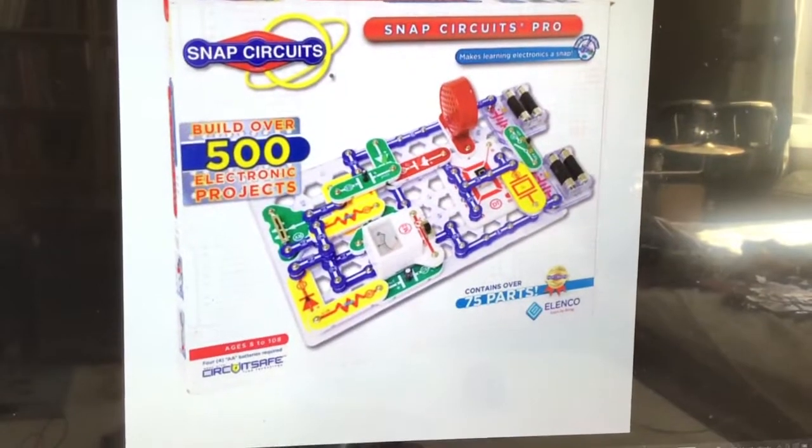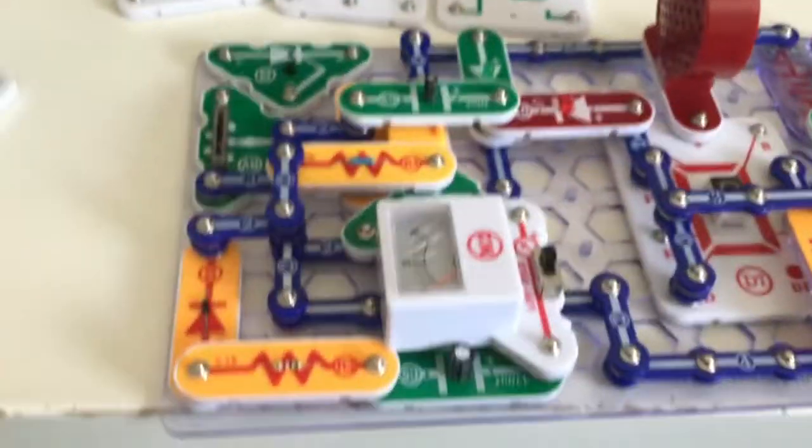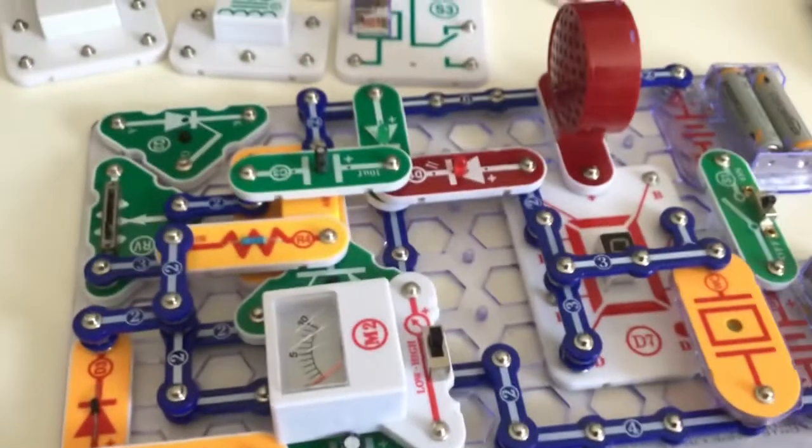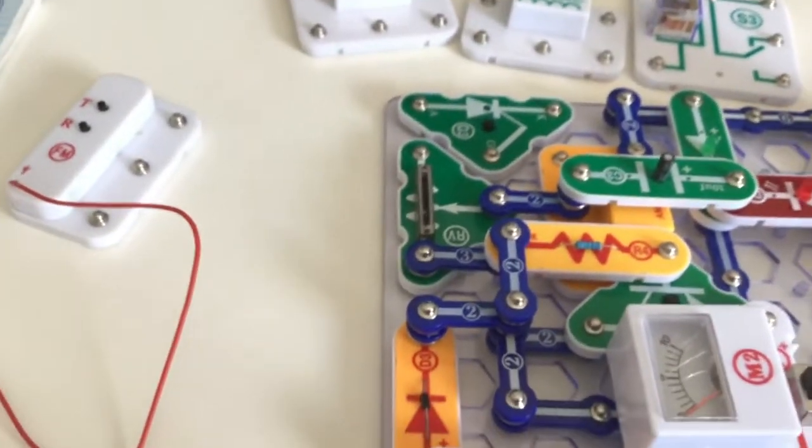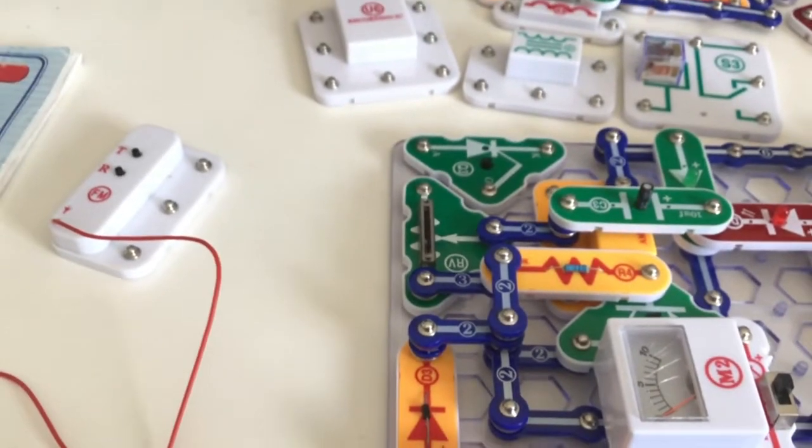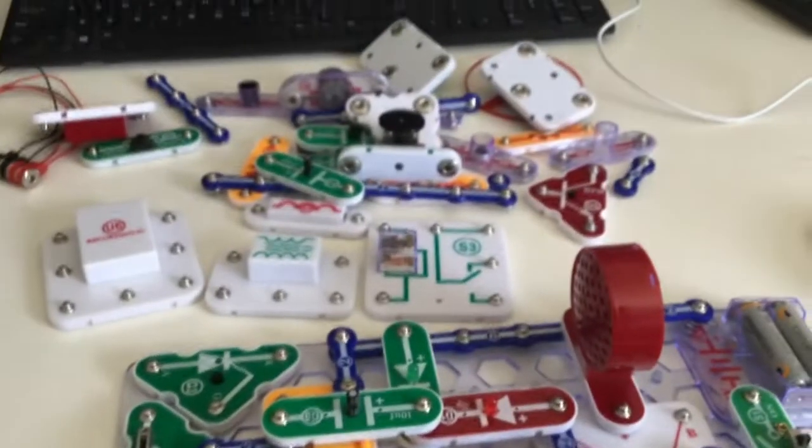Number three of the set is SnapCircuits Pro. It contains over 75 parts and builds over 500 exciting projects. This is the third generation of the set, right after SnapCircuits Junior and Deluxe.